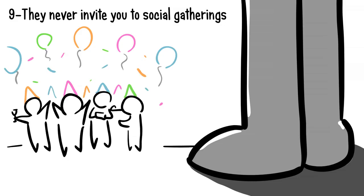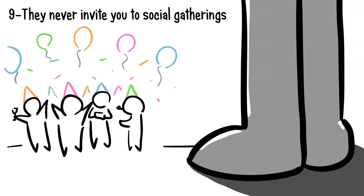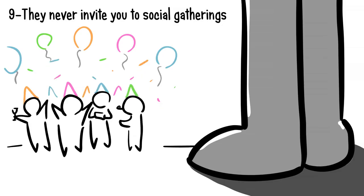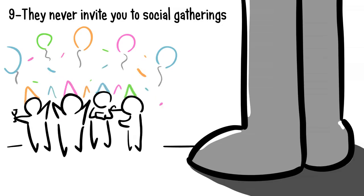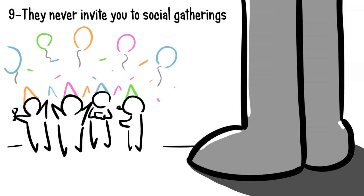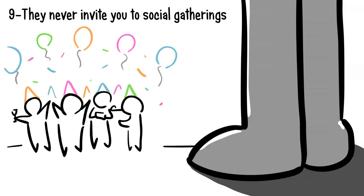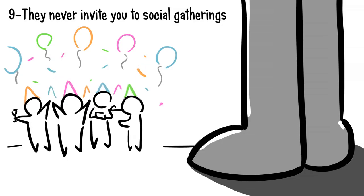Number nine: They never invite you to social gatherings. Why would you even want to be invited to someone's birthday party when you know they hate you? Still, it hurts to know, right? When you see all your friends, families, and co-workers being invited, everyone except you. It slowly becomes obvious they want nothing to do with you.